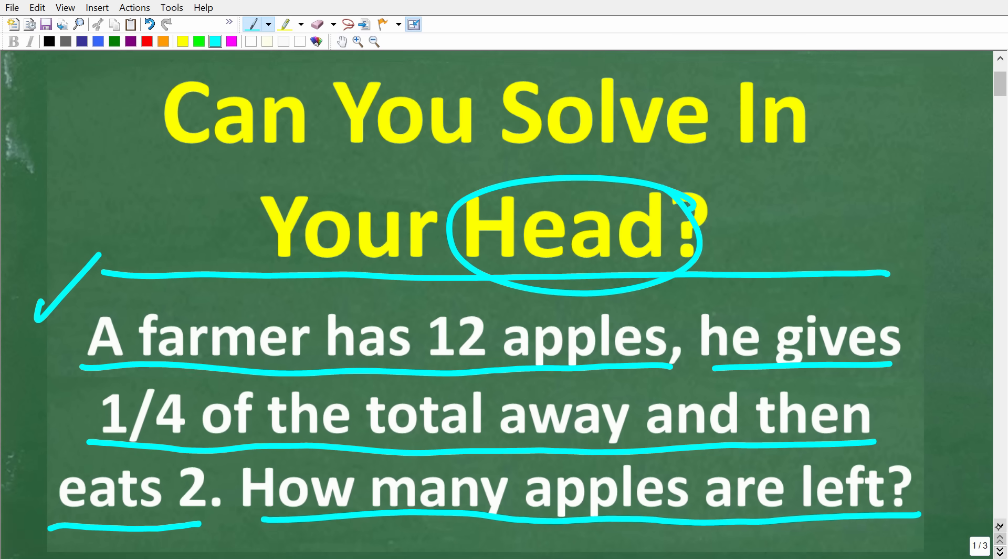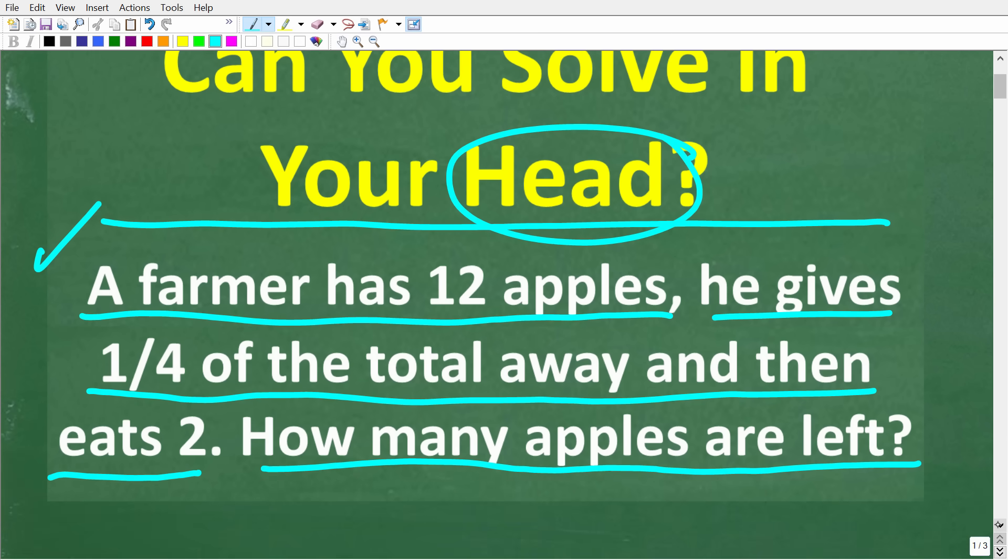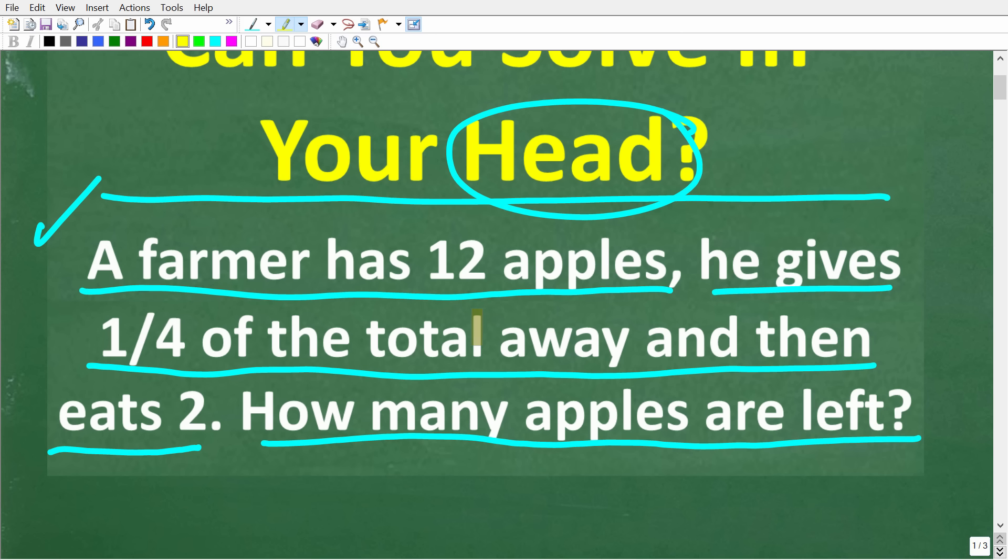Okay, so once again, here is the problem and there is no time limit and there is no one way to do it. As long as you kind of figure this out all in your brain, that's what counts. So, a farmer has 12 apples, he gives one-fourth of the total away and then eats two. How many apples are left?